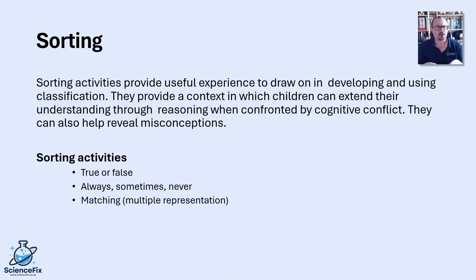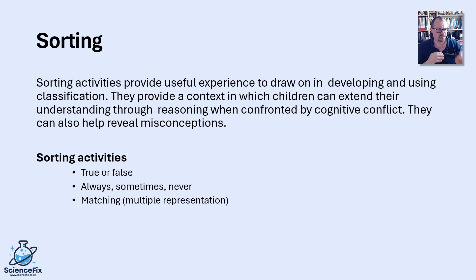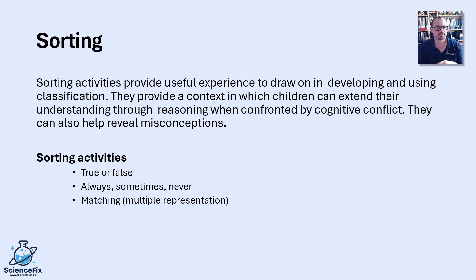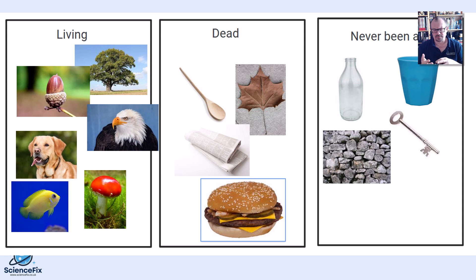We can have sorting activities - these could be card sorts or on the interactive whiteboard. They provide a context where children can show their understanding through reasoning, and maybe there's a bit of cognitive conflict. These might help reveal misconceptions. It could be sorting statements into true or false, always/sometimes/never, or matching and classifying - animals and plants, vertebrates and invertebrates, mammals, birds, and fish, and so on. For example, a Google Jamboard where everyone is sorting things into living, dead, and never been alive - children access it on their Chromebooks and move images while discussing in pairs. Materials is a good one too, with things like toothpaste or shaving foam which are halfway between states - emulsions, or a liquid and gas mixed together - so which things are confusing?